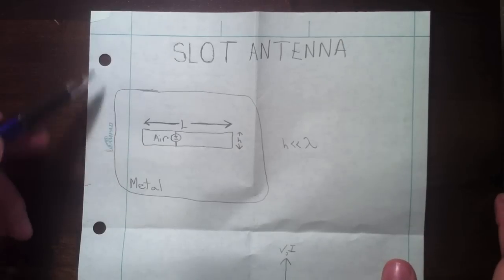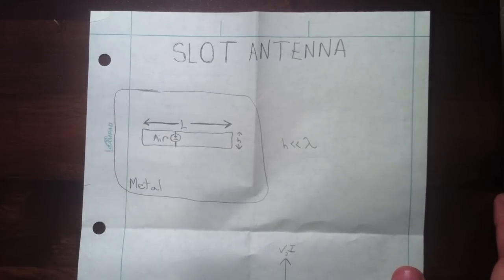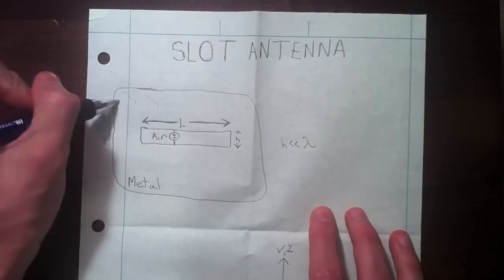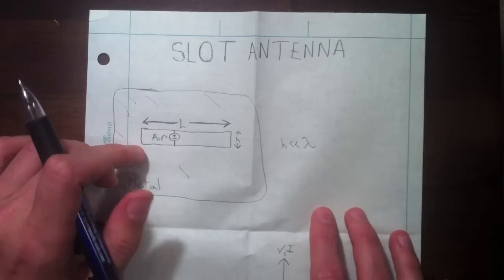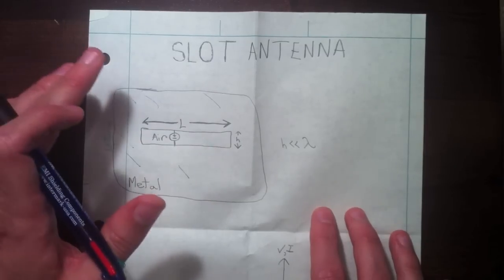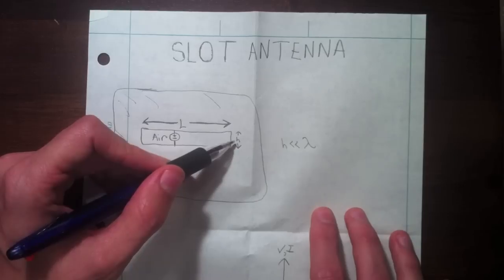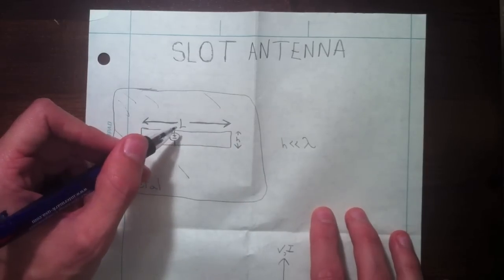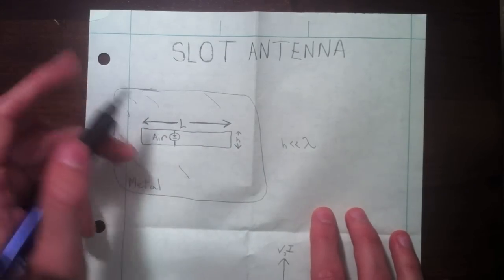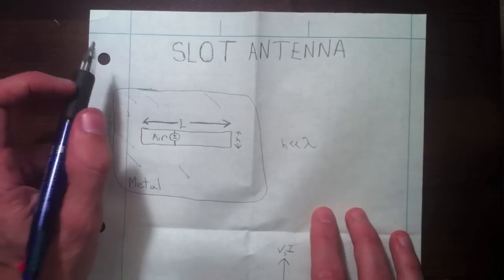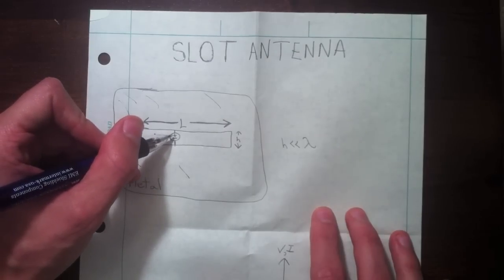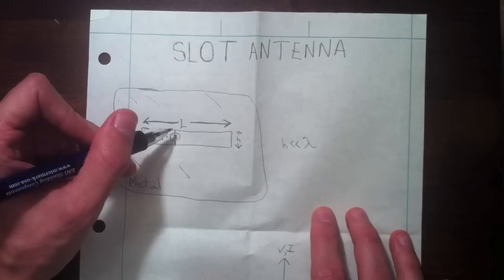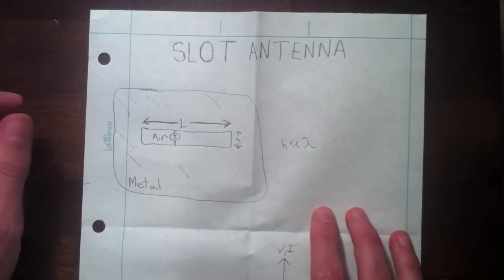Here's a basic slot antenna: you have a ground plane with metal in this region and a gap within that metal. For the analysis, we'll assume the gap height is much less than lambda, and this length is lambda over two long. The feed is a voltage source from one end of the slot to the other, offset from the center, and we'll see why that is.